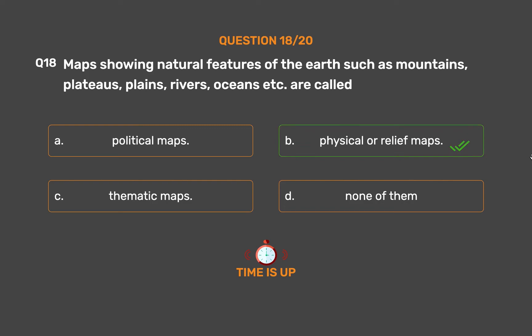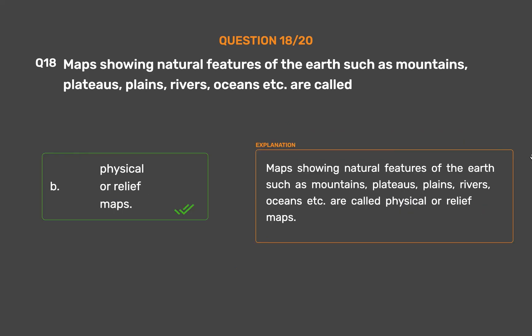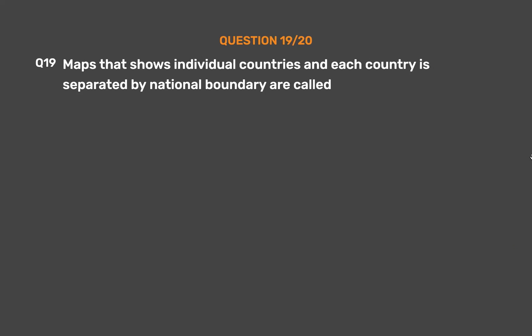The correct answer is Option B: Physical or relief maps. Maps showing natural features of the earth such as mountains, plateaus, plains, rivers, oceans, etc. are called physical or relief maps.